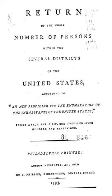In 1997, OMB issued a Federal Register Notice regarding revisions to the standards for the classification of federal data on race and ethnicity. OMB developed race and ethnic standards in order to provide consistent data on race and ethnicity throughout the federal government.